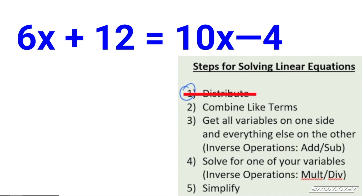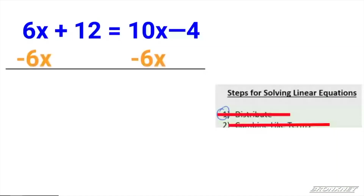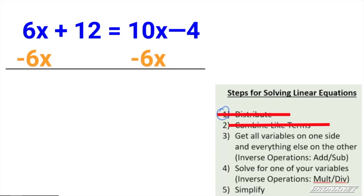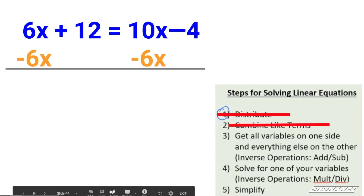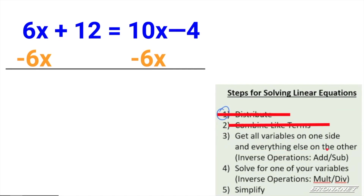In this particular case, there was no need to distribute. So we just cross out step one and move straight to step two — combining like terms on both sides of the equation. We can't do that either, and that's okay. So now we need to move to step three, which is to get variables on one side and everything else on the other.